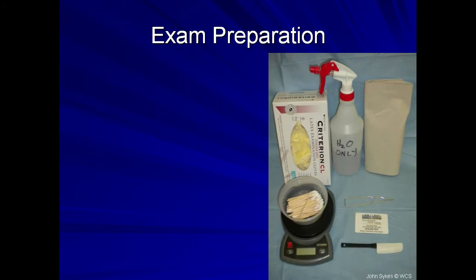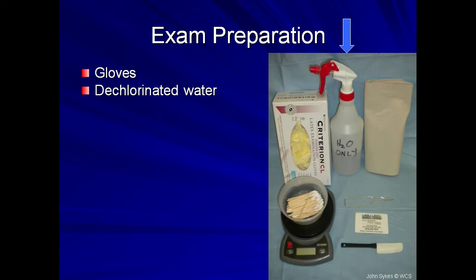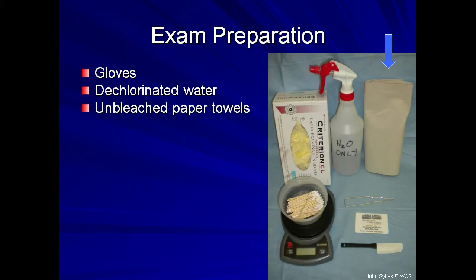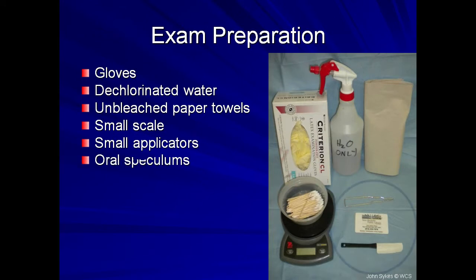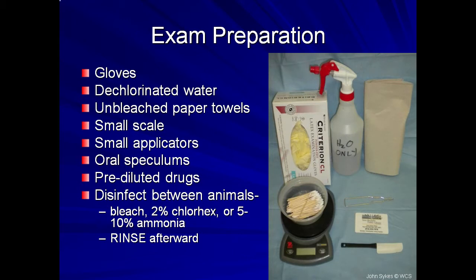Useful items to have handy prior to the exam include powder-free gloves; dechlorinated water or amphibian Ringer's solution in a spray bottle — this bottle should be purchased and used only for this purpose and not switched between water and other solutions. Unbleached paper towels should be used, as bleached products contain chlorine that can remain in the towel and be toxic to amphibians. Other useful items include a small scale, cotton-tipped applicators, oral speculums, and commonly used medications such as enrofloxacin or furosemide, already diluted to concentrations measurable for small patients. Tools, scales, and exam tables should be disinfected between animals using diluted bleach, chlorhexidine, or ammonia, and any surface or tool must be rinsed after cleaning to prevent harming the next patient.